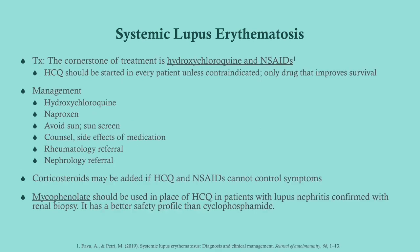The cornerstone of lupus treatment is hydroxychloroquine and NSAIDs. Hydroxychloroquine — not for COVID — is for lupus and some other disorders. You should always start hydroxychloroquine in every patient unless there are contraindications; it is the only drug that improves survival in lupus. Give them hydroxychloroquine and naproxen — naproxen is superior to ibuprofen. Counsel them to avoid the sun and use sunscreen, counsel them about the side effects of hydroxychloroquine, and refer them to rheumatology and nephrology. Steroids can be added if hydroxychloroquine and NSAIDs alone cannot control symptoms.